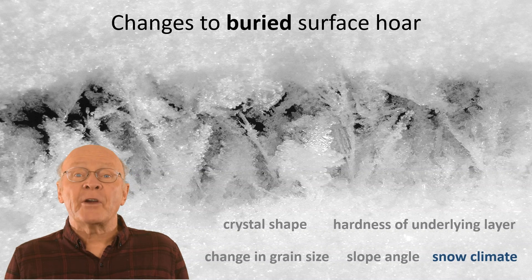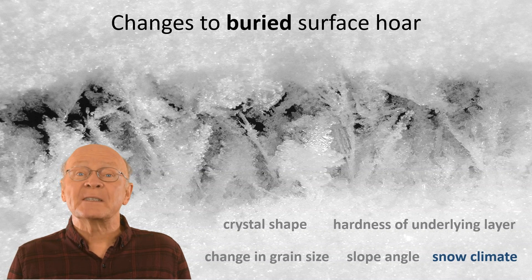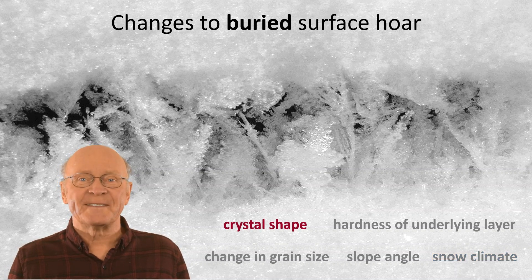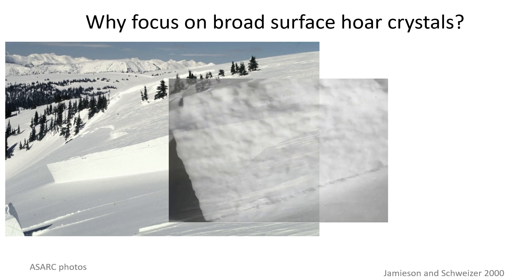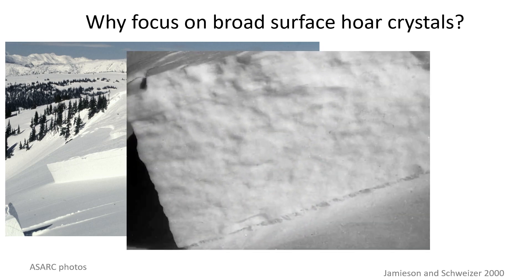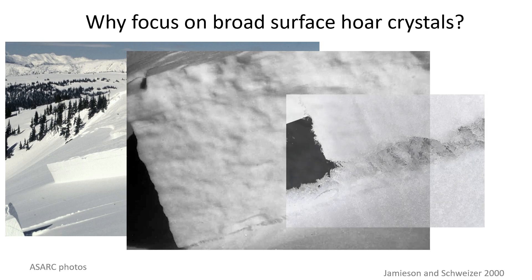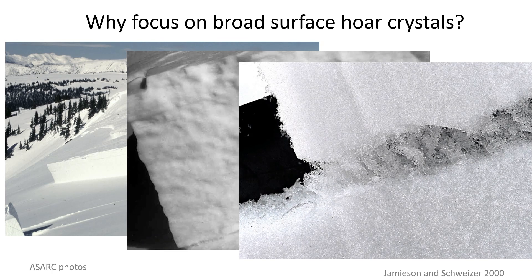Of the various shapes of crystals that Simon mentioned, we're going to focus on the broad forms. Why focus on broad forms like wedges? Because when the failure layer of a slab avalanche consists of surface oar, it is usually wedge-shaped crystals. At least that is true in the Columbia Mountains of Western Canada.